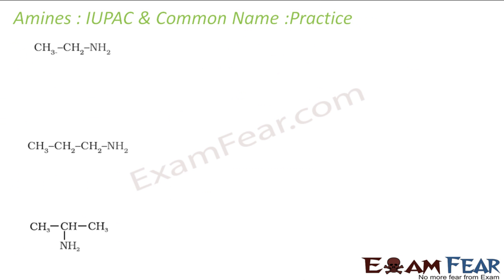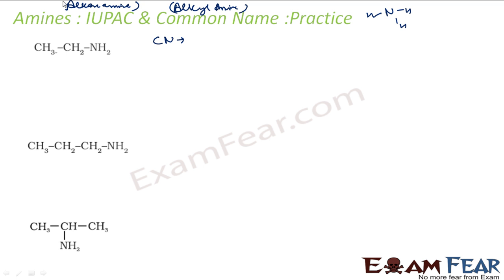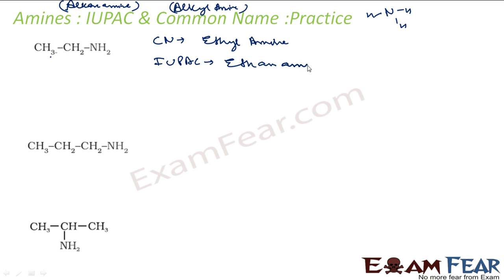Now let's take some practice examples. This first compound — comparing with NH3, only one hydrogen is replaced, so this is a first-degree amine. The common name follows the alkyl amine format: this is a 2-carbon group, so the common name is ethylamine. The IUPAC name is ethanamine.